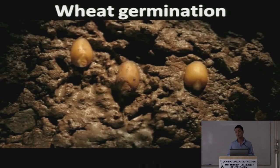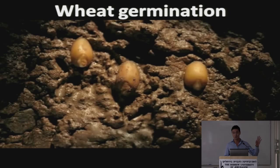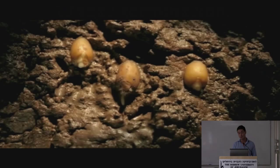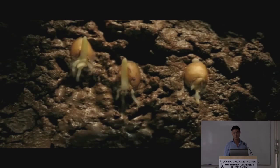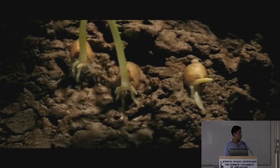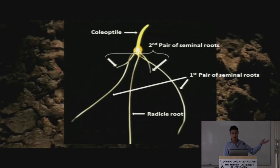To explain what mechanisms I'll discuss, I first need to explain how wheat germinates. Wheat germination starts with the development of the radicle, then the first pair of seminal roots, then the coleoptile, and finally the second pair of seminal roots. This is how the entire structure looks once completely developed, and this is the case for most commercial wheat cultivars.